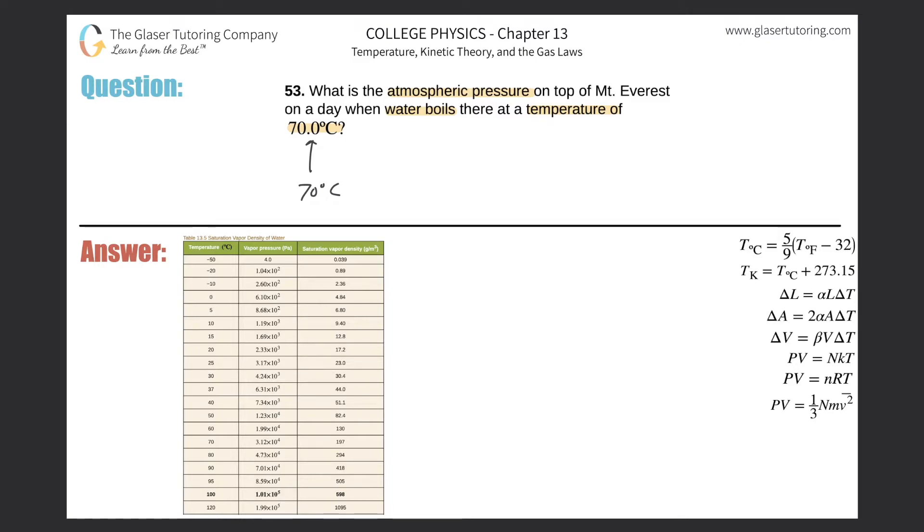So basically, if you know the temperature at which water boils, you will also know the atmospheric pressure. And we know that by just looking it up on a table for this class. There's ways to calculate it, but we're not going into that here.